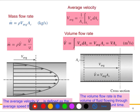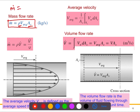Writing down the final expression for the mass flow rate: ṁ = ρ · Ac · Vn, where ρ is the density, Ac is the cross-sectional area, and Vn is the normal velocity component. Instead of Vn, we actually write the average velocity, because the velocity changes throughout the domain.